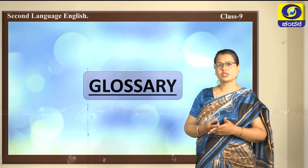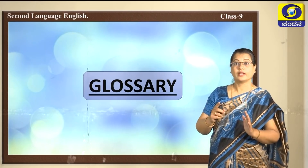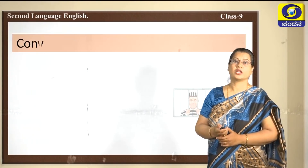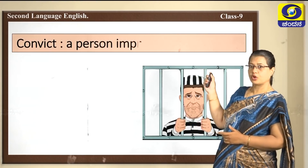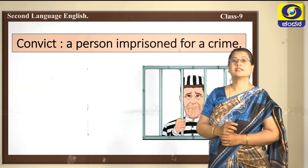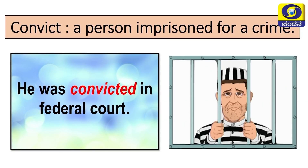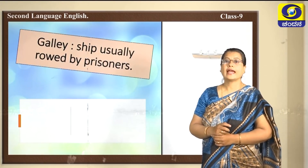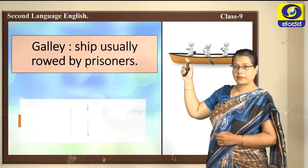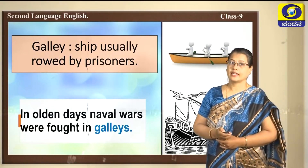Now let us move on to the glossary. In the scene you might have come across many new words. The first one: convict — a prisoner imprisoned for a crime. Usage: 'He was convicted in federal court.' The next one: galley — a ship usually rowed by prisoners. Usage: 'In olden days, naval wars were fought in galleys.'